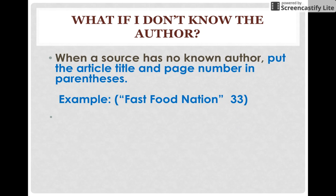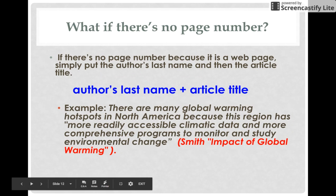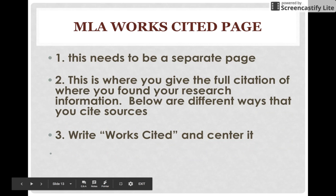You're probably wondering: what if I don't know the author — my website doesn't have an author? When there's a source with no author, you put the article title and page number in parentheses instead of the author. On many websites there's no page number unless it's a PDF, so if there's no page number, you use the author's last name plus article title. For example, at the bottom in red you can see it's the author's last name Smith and then the article title 'impacted global warming' in parentheses.